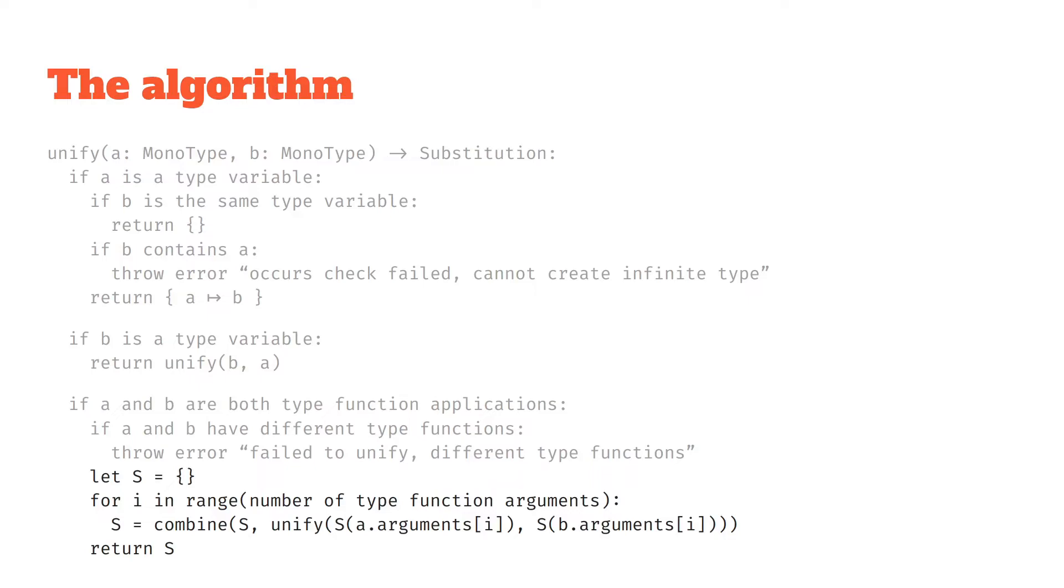And then we're also going to combine these substitutions together, and as we're doing that that's going to collect up all our different type constraints and make sure we're consistent throughout that type function application. And finally once we've collected all those type constraints we're going to return that substitution back up.